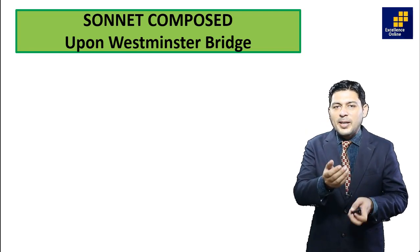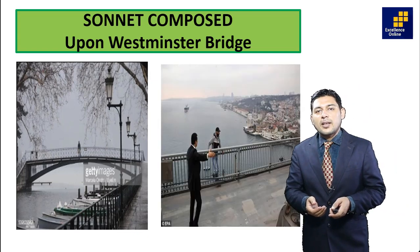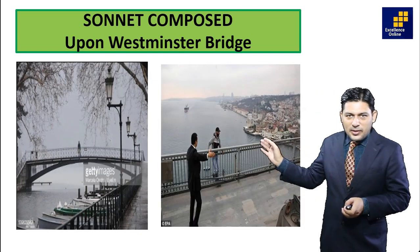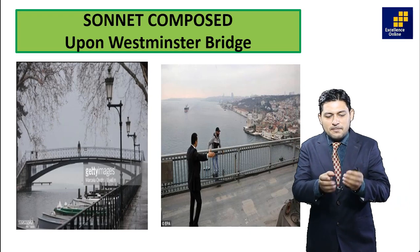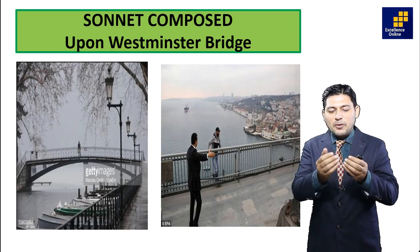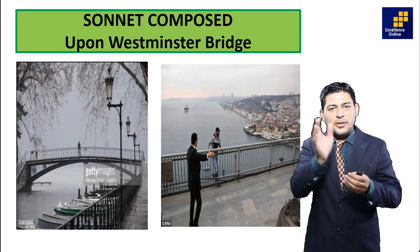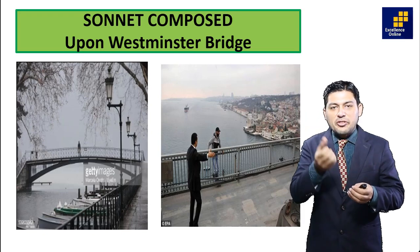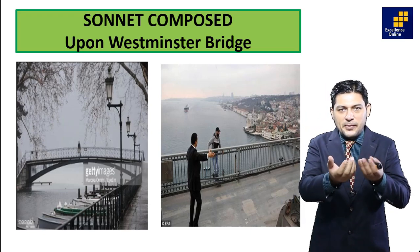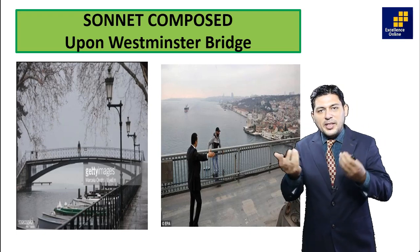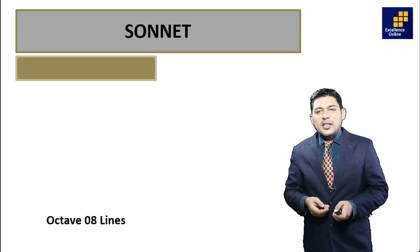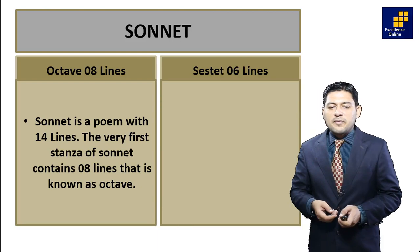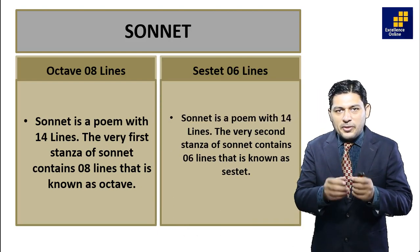One stanza has eight lines and the second stanza consists of six lines — called the octave and the sestet. The poem we are studying is 'Sonnet Composed upon Westminster Bridge,' composed by William Wordsworth, a poet of nature whose poetry is all about natural description.